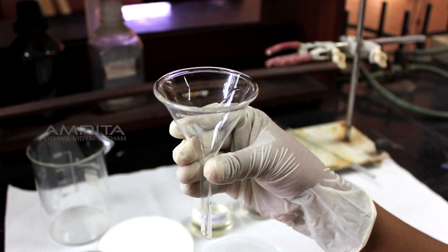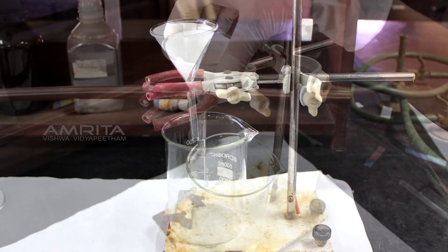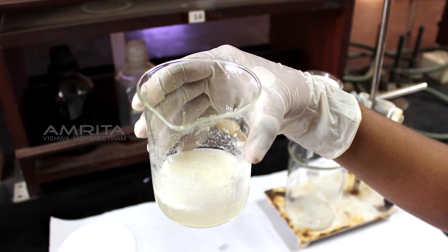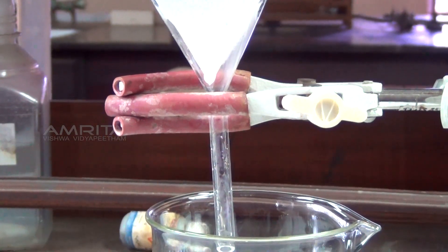Take a filter funnel and place the filter paper in it. Fix it in a stand and place a beaker below the funnel. Pour the contents of the beaker into the funnel over the glass rod and filter the contents.